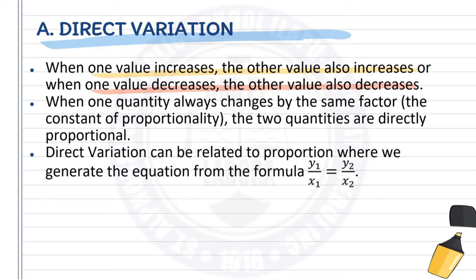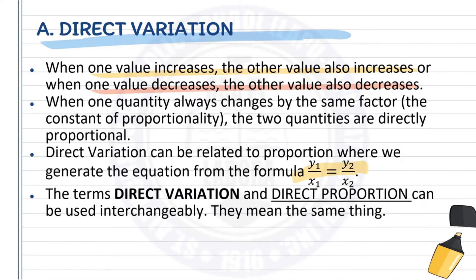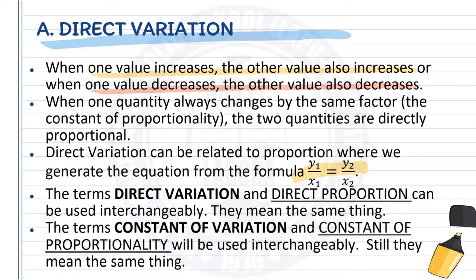Direct variation can be related to proportion, where we generate the equation from the formula y₁ over x₁ equals y₂ over x₂. The terms direct variation and direct proportion mean the same thing — you can use them interchangeably. Similarly, the constant of variation and constant of proportionality refer to the same thing.